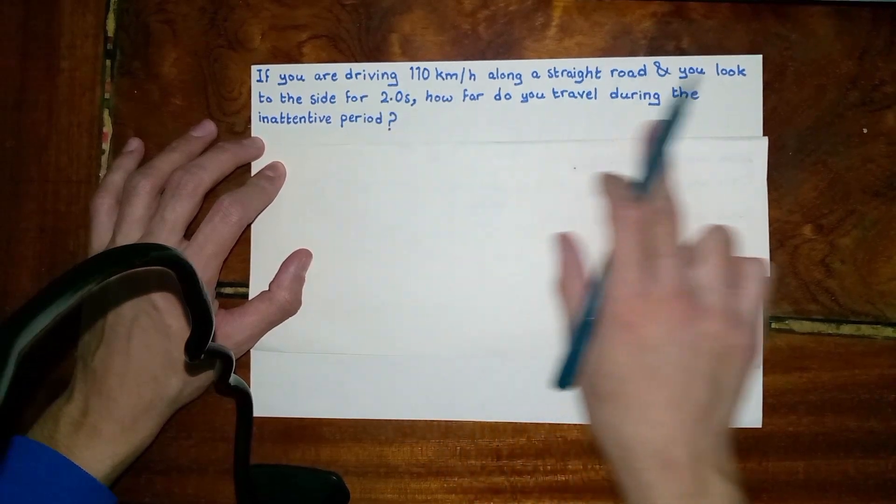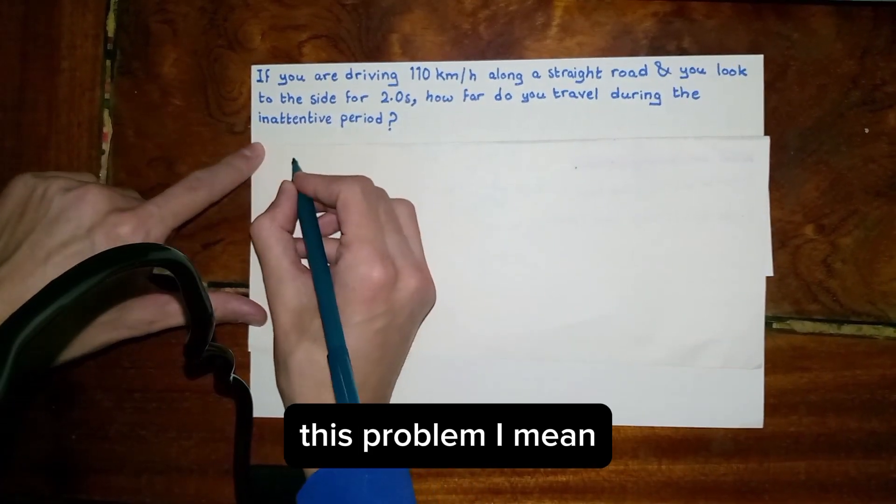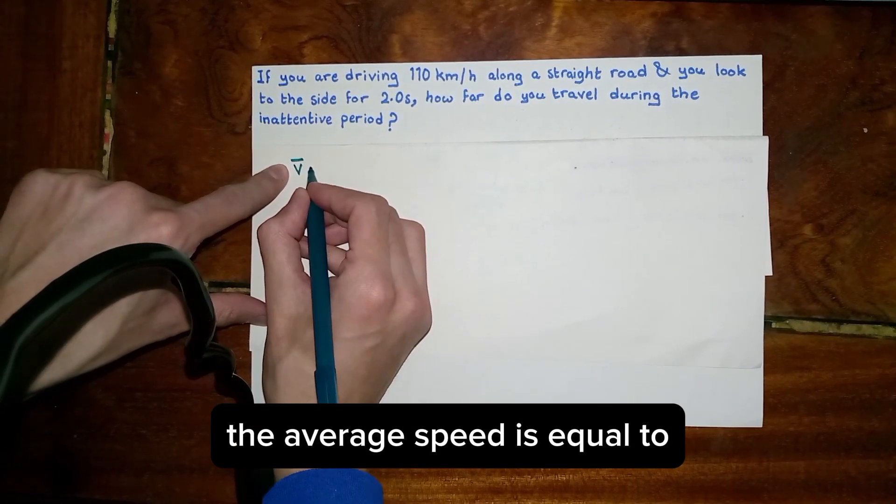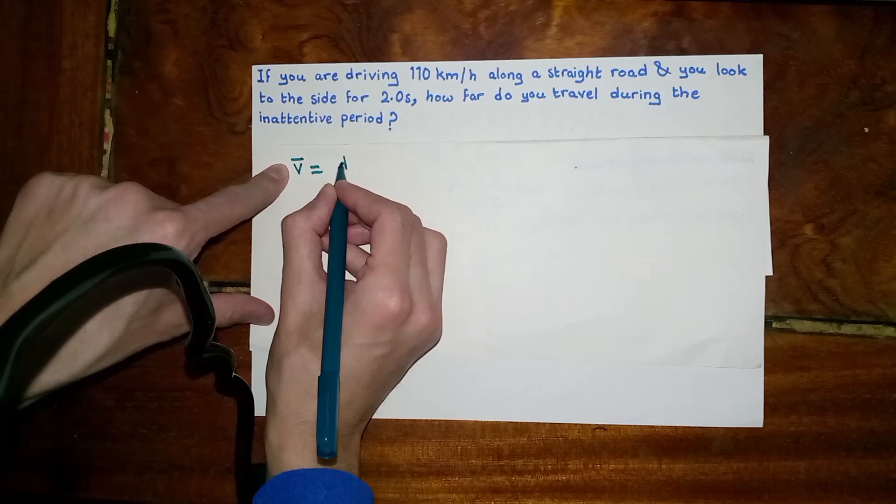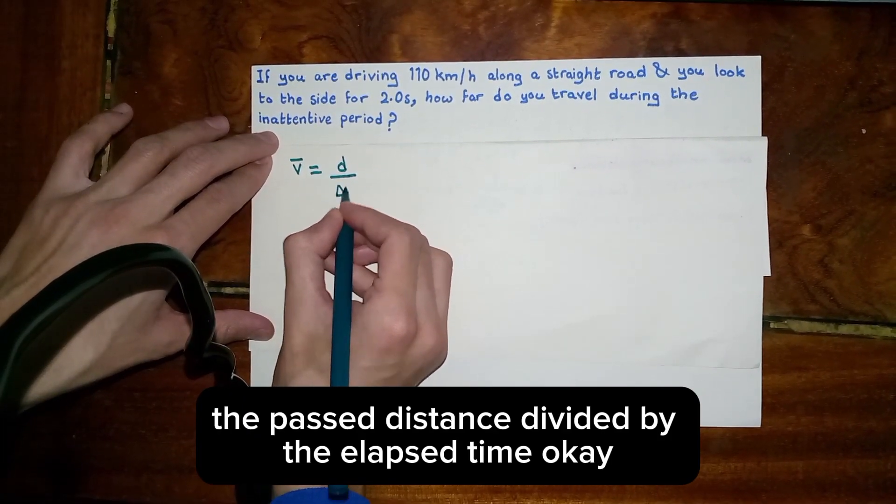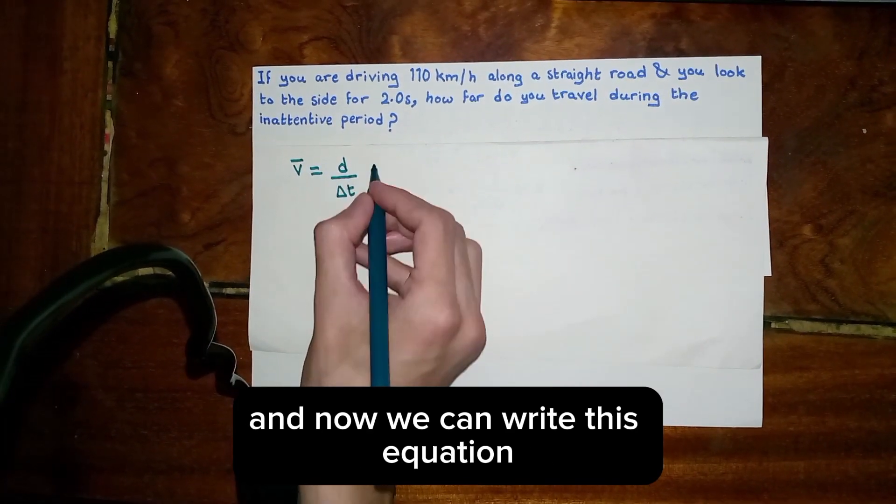In order to solve this problem, we are going to use this equation: the average speed is equal to the distance passed divided by the elapsed time.